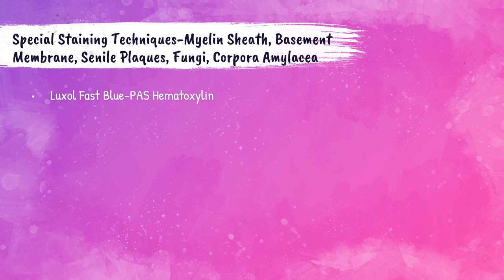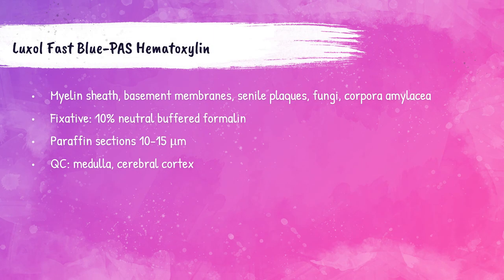There is a special stain for myelin sheath, basement membranes, senile plaques, fungi, and corpora amylacea: the Luxol Fast Blue PAS hematoxylin method. Corpora amylacea, also called waste chromosomes, are granular structures that can occur in the brain during aging and accumulate in specific areas in neurodegenerative conditions. Fix in 10% NBF, cut at 10–15 microns; QC is medulla or cerebral cortex tissue.